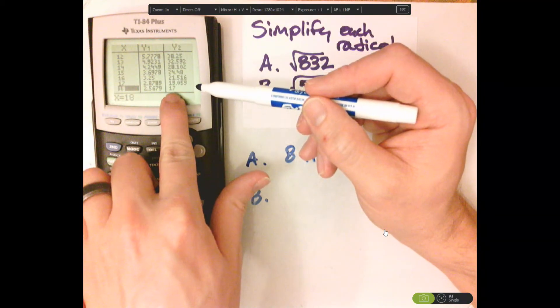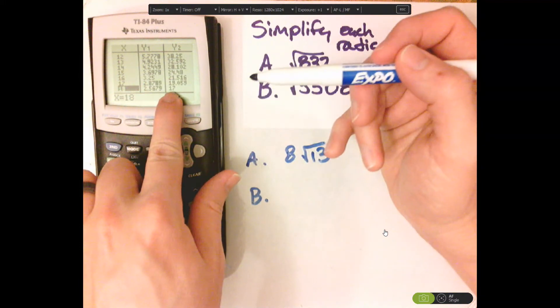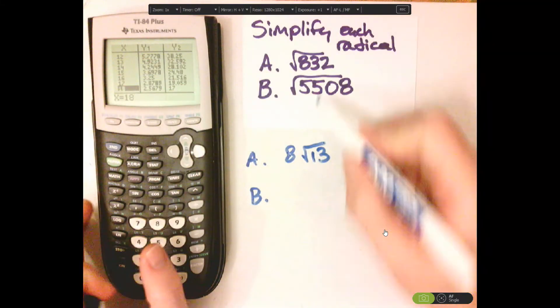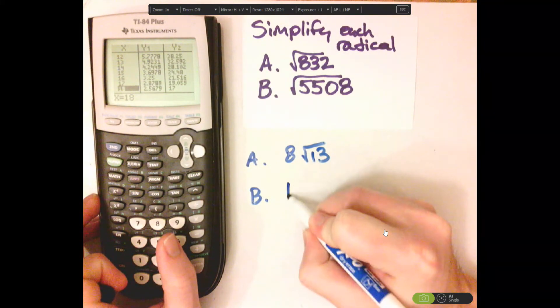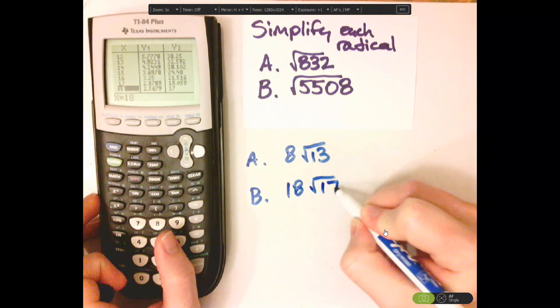Look at 17. See how 17, there's no square that goes into 17? So that must be how you would simplify that second one. So 18 square root of 17.